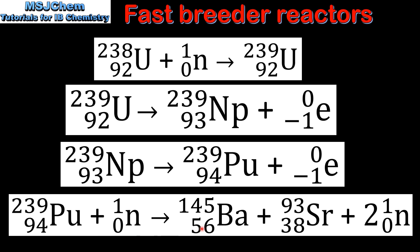The products are barium-145, strontium-93, and two neutrons. So in this series of nuclear reactions, non-fissile uranium-238 is converted to fissile plutonium-239. Because plutonium-239 is fissile, it is able to sustain a nuclear chain reaction.